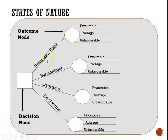If you choose to build a new plant, we could face favorable, average, or unfavorable conditions — same for subcontract, overtime, and do nothing. However, for do nothing, regardless of the condition, the payoff is zero. So instead of showing uncertainty with an outcome node, we could simply show that the payoff for do nothing is zero and remove the other calculations for simplicity.